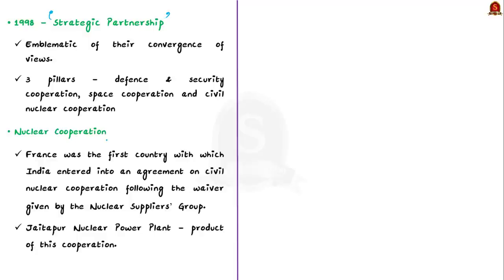The principal pillars of this strategic partnership include defense and security cooperation, space cooperation, and civil nuclear cooperation. In the nuclear arena, France was the first country with which India entered into an agreement on civil nuclear cooperation. This happened after India received the waiver from the Nuclear Suppliers Group.